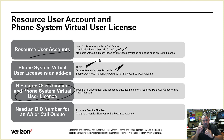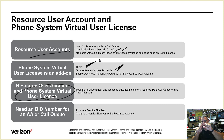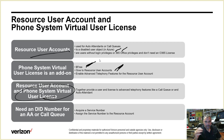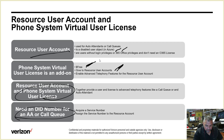Even if you're nesting them — like a call queue with branches — you only need one resource account for that particular call queue. If you need a DID number, you can acquire a service number and assign it to the resource account as well.